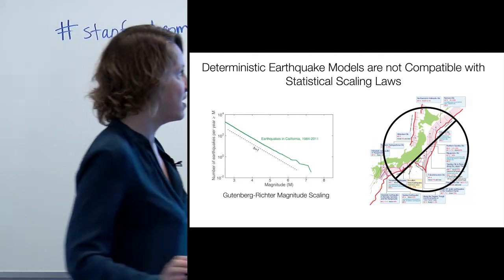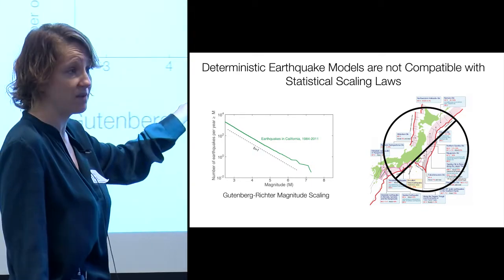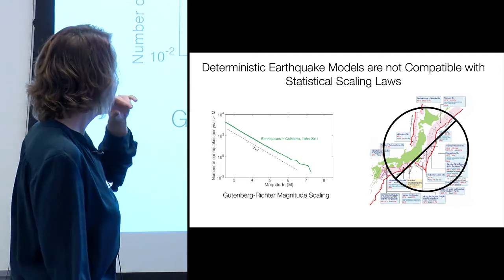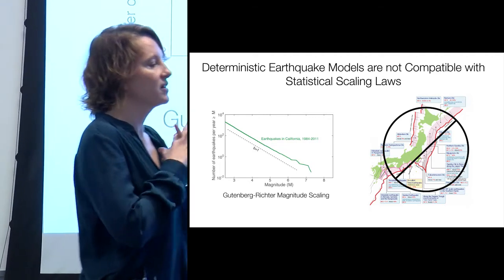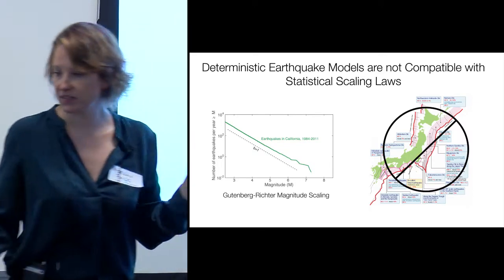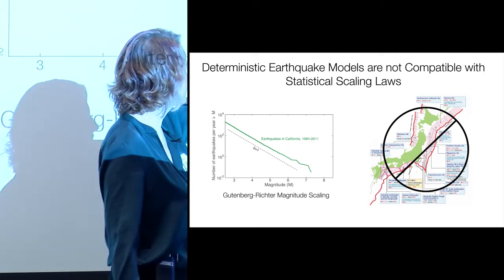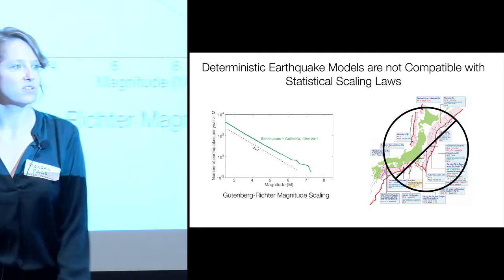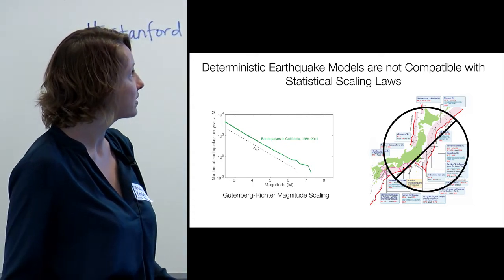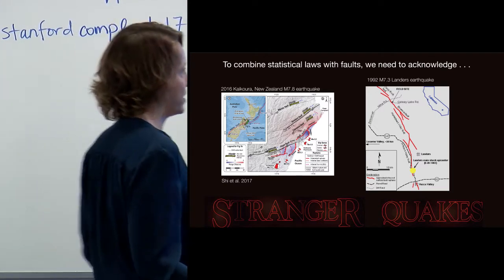One thing we've discovered by building this model is that if you make a kind of model like we had in Japan, and we had these same types of models in California—I'm not just saying just Japan did it, we had these segmented models in California as well in the past—what we found is that these models are not consistent with Gutenberg-Richter magnitude scaling relationships. In Gutenberg-Richter magnitude scaling relationships, you have these very rare, very big events. This is just what we've recorded, but this doesn't stop. It keeps going at least up to the lower magnitude eights in California. So to combine our known statistical laws with faults, we have to acknowledge that there are these weird stranger quakes that can happen.